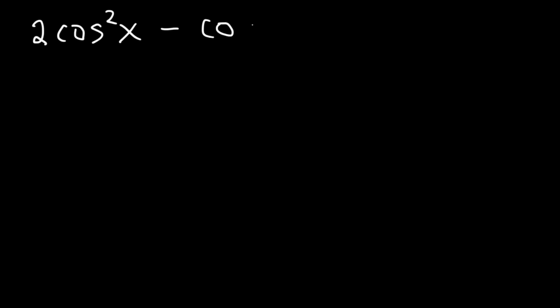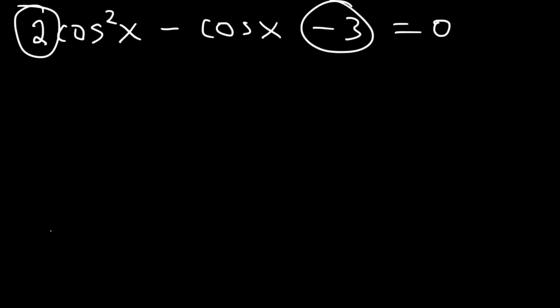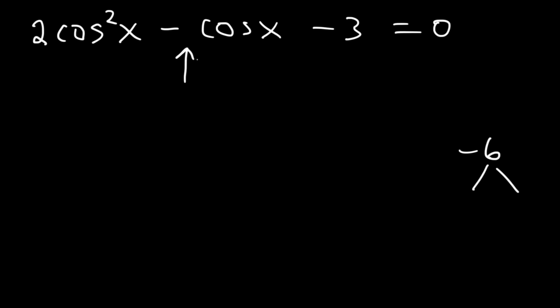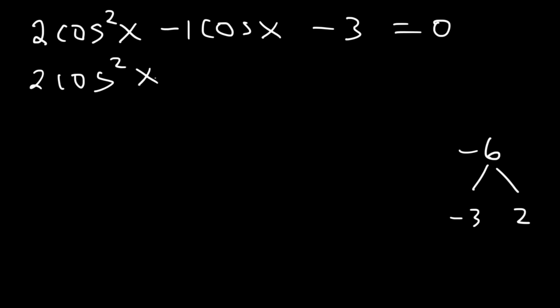Here's another one: 2 cosine squared x minus cosine x minus 3. Let's find the value of cosine. This time we have a trinomial with a leading coefficient of 2, so first we've got to multiply 2 and negative 3, which is negative 6. What two numbers multiply to negative 6 but add to the middle coefficient of negative 1? This is negative 3 and 2.